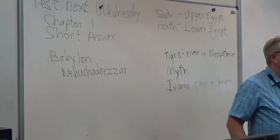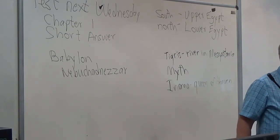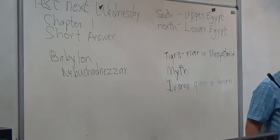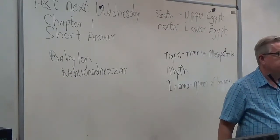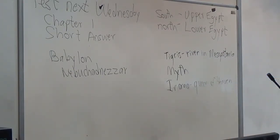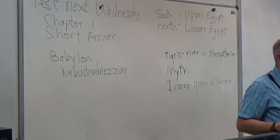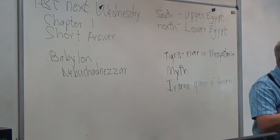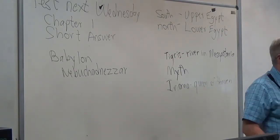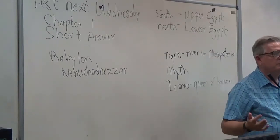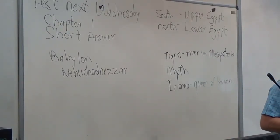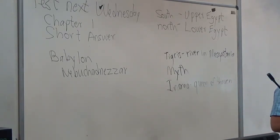I believe strongly that the sun controls our temperature more than anything man does. Every three hundred or so years the sun cools. It cooled in the early 1300s and brought about the Black Death — when the sun cools, millions of people die of starvation because farmers plant their crops on the same day as always, and a frost hits before harvest and the crops are gone or frozen.